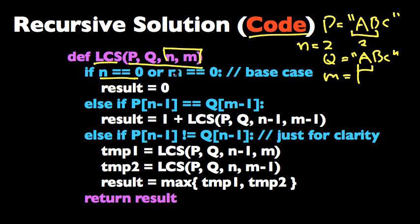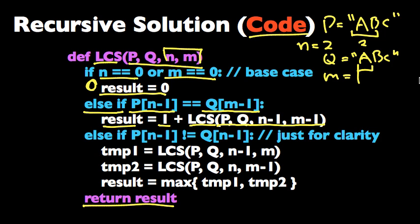Here's our base case: if N equals 0 or M equals 0, that means we are looking at an empty string, so we'll just return 0. And I'm storing this result in the result variable and returning it here. If that's not the case and if the last character of P and the last character of Q are the same, we'll just return 1 plus LCS of P, Q, N-1, M-1. And if that's not the case, the last characters are not going to be the same, but I wrote this just for clarity. And what we're going to do here is take LCS of P, Q, N-1, M and LCS of P, Q, N, M-1, and we'll take the maximum one of those and return that.